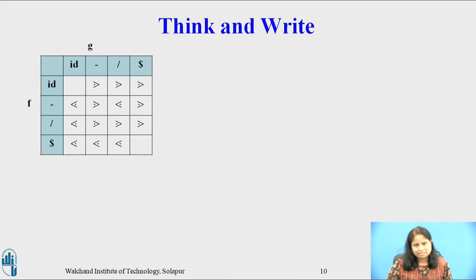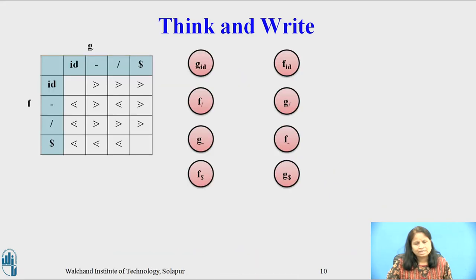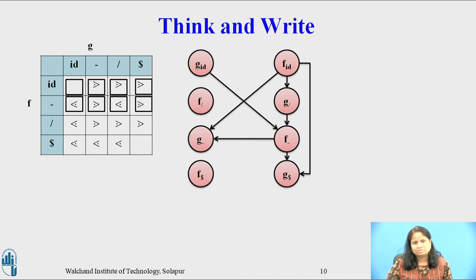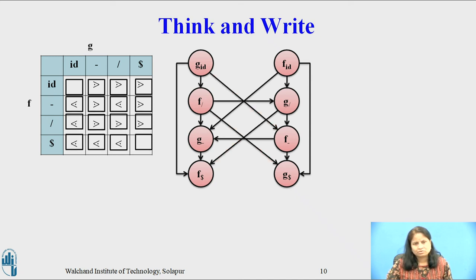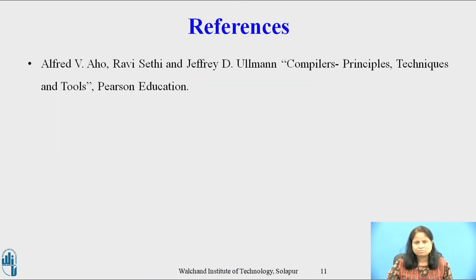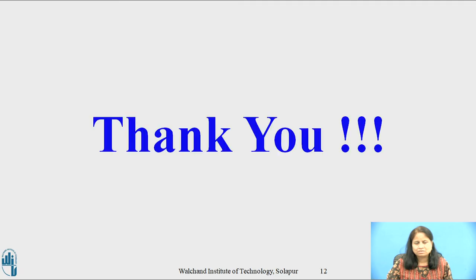I hope all of you have completed this activity. Consider the nodes for the functions f and g of every symbol: id, plus, star, and dollar. Now take the first row of the operator precedence relation table and, according to the entry in each cell, draw the arc in the graph. Similarly, do the second row, third row, and fourth row. The entries in the matrix are given on this slide. This is the reference used for preparing this presentation. Thank you.